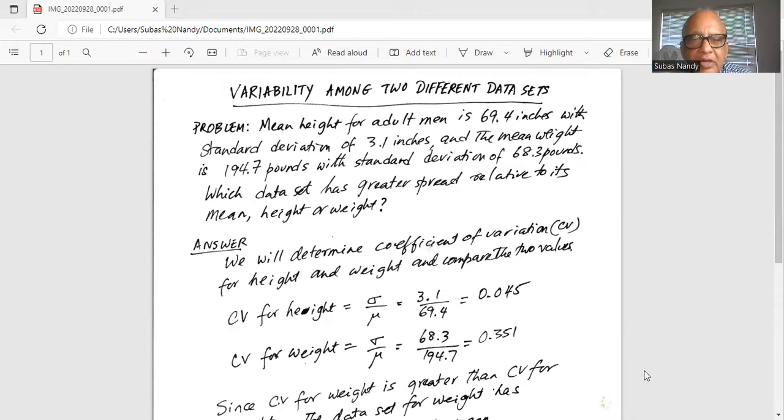Which data set has greater spread relative to its mean, height or weight? We will determine the coefficient of variation, called CV, for height and weight and compare the values.